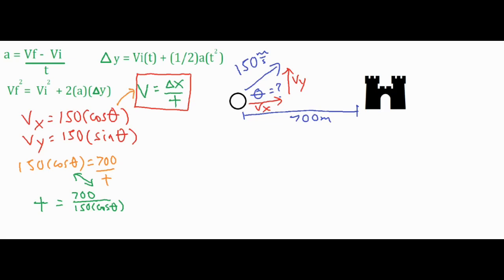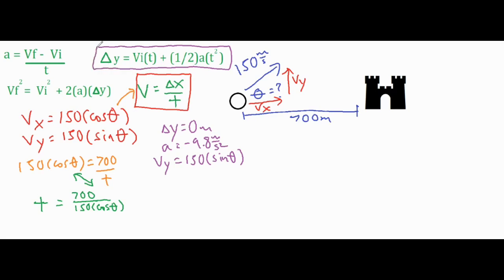Next, we set up a second expression using vy equals 150 sine theta. In the vertical direction, we know delta y is zero because the cannonball starts and finishes at ground level, so there is no change in height. The acceleration due to gravity is negative 9.8 meters per second squared, and vy is 150 times the sine of theta.